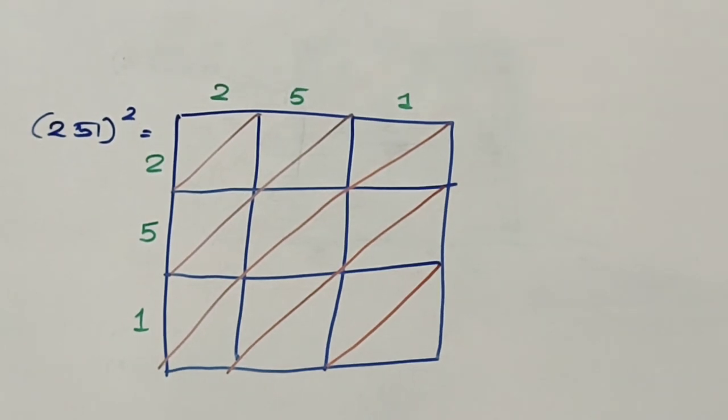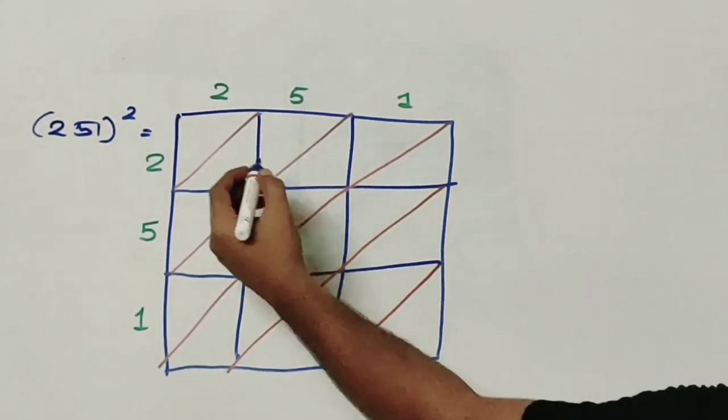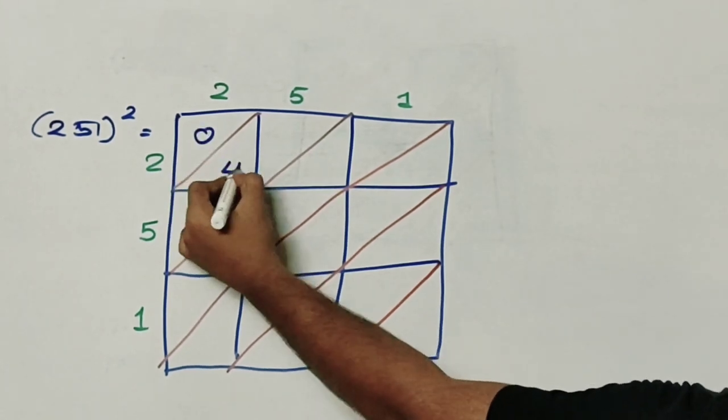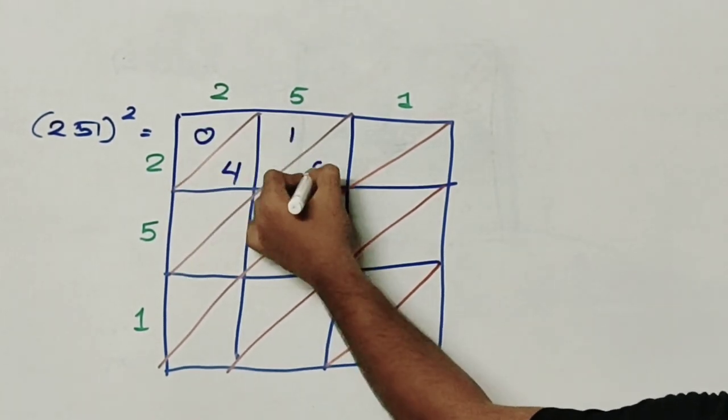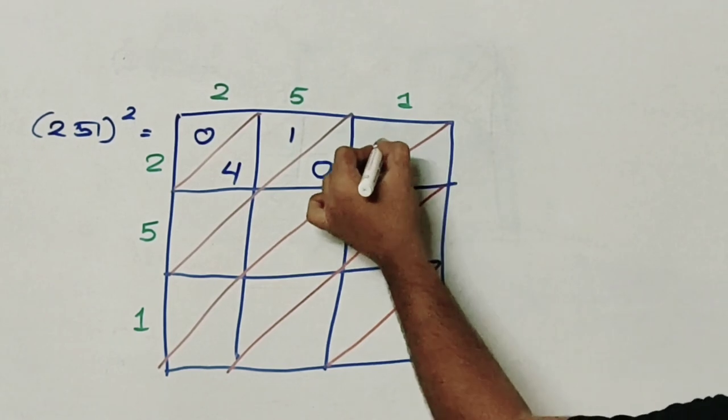So we will multiply the numbers as in the last case. 2 into 2 gives me 4. 2 into 5 gives me 10. 2 into 1 gives me 2.